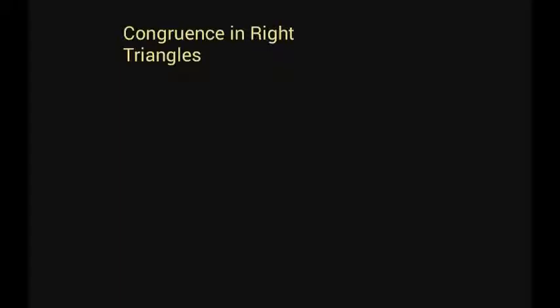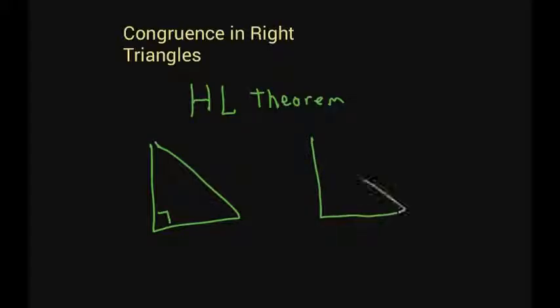Today we're going to talk about congruence in right triangles. The first thing we're going to go over is the hypotenuse-leg theorem. In that theorem, you have two right triangles. If you know the hypotenuses are congruent and one of the legs is congruent, then the two triangles are congruent.